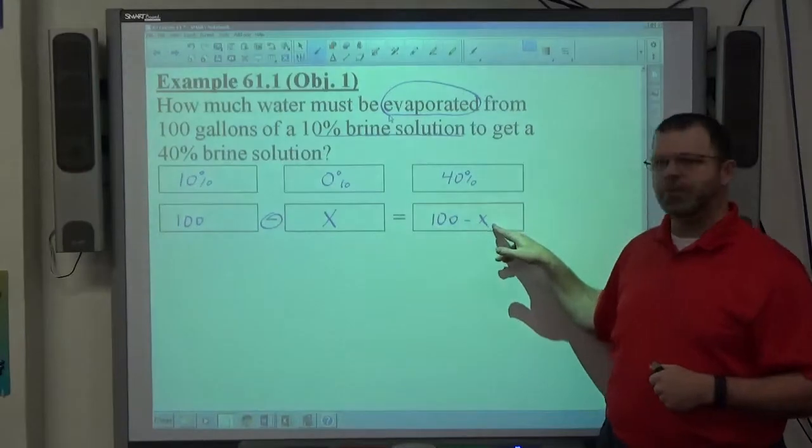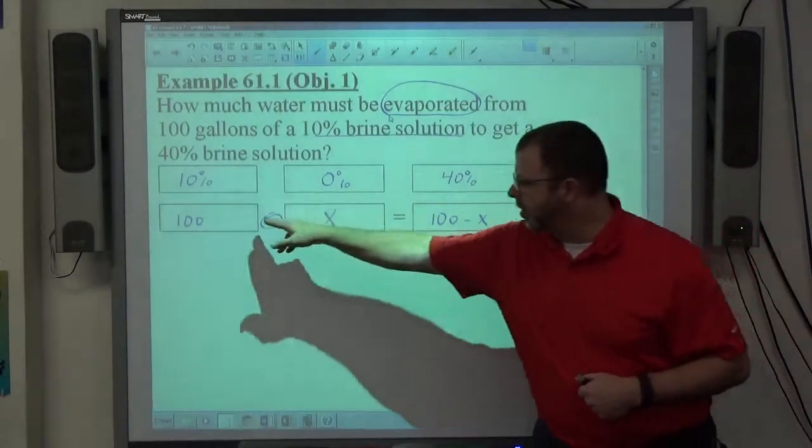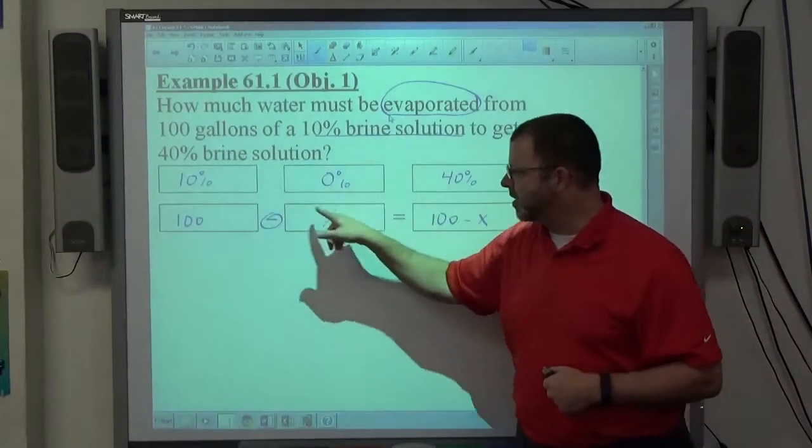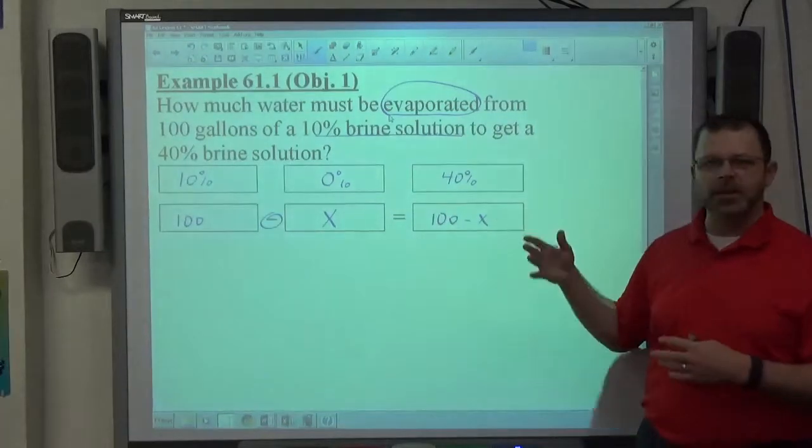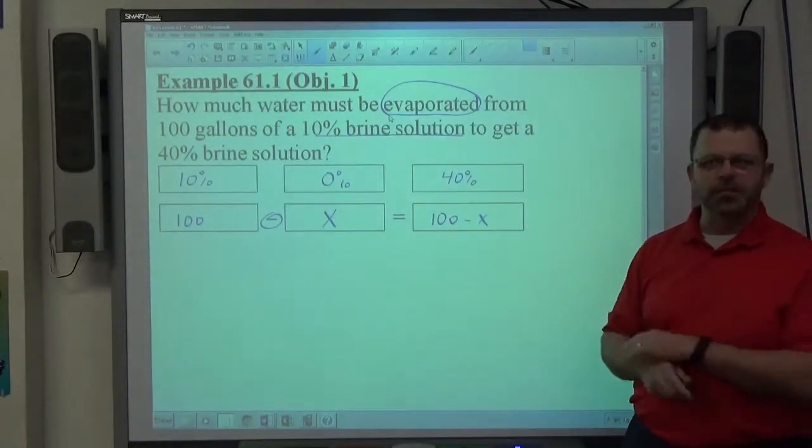So if this is 60, this will be 40, right? Because 100 minus 60 is 40. If that's 10, 100 minus 10 is 90. So the amount of stuff left over is going to be there.